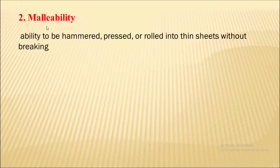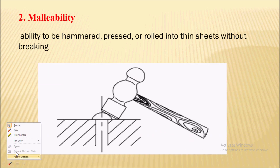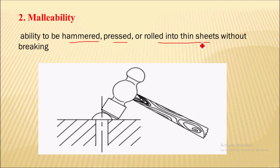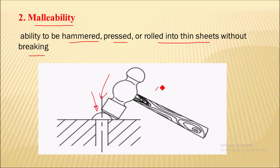Next is malleability. Malleability is nothing but the ability to be hammered, pressed, or rolled into a thin sheet without breaking. It is a property of a material to deform under compression and take a new shape. Here you can see a compressive load is applied by a hammer due to which the material is getting a shape. This property is nothing but the malleability of a material.